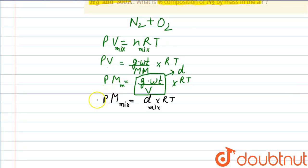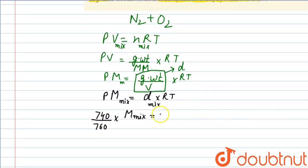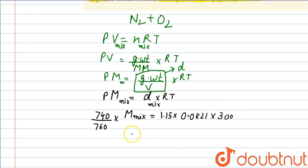Now we put in the values. The pressure is 740 mm of mercury, which we convert to atmosphere by dividing by 760. We have to find the molar mass of the mixture. The density is given as 1.15 g/L. We take R as 0.0821 because pressure is in atmospheres and temperature is 300 Kelvin. From here, the molar mass of the mixture comes out to be 29.09 grams.